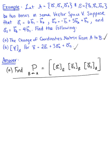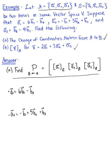Let's think about the three vectors that define basis a. Vector a₁ is defined as 6 times vector b₁ minus vector b₂. Vector a₂ is defined as minus vector b₁ plus 5 times vector b₂ plus vector b₃. And vector a₃ is defined as vector b₂ minus 4 times vector b₃.